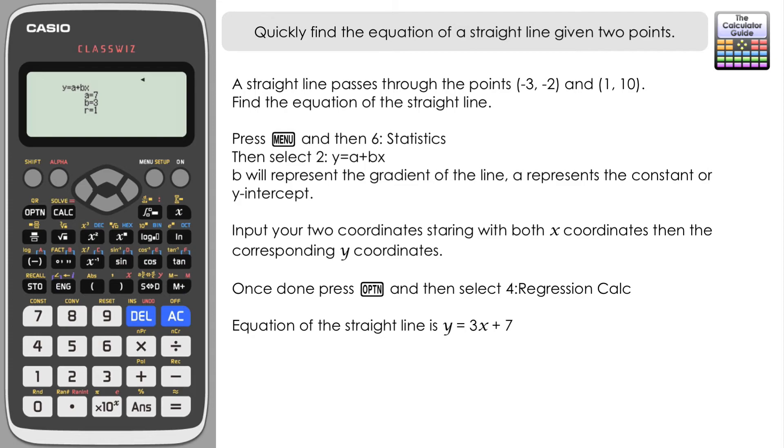The r that's there will be referring to, if we used the regression mode correctly, that would be for the product moment correlation coefficient.